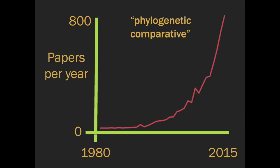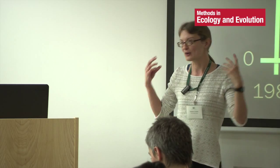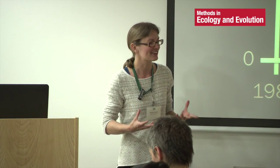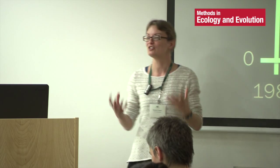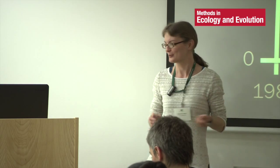This is some data I took from Google Scholar last week. You can see from 1980 up to 2015, this is the number of papers published each year which feature the term 'phylogenetic comparative.' This has increased a huge amount — we're up to nearly 800 papers a year using these methods. So they're incredibly popular, with loads of really exciting things that you can do with them. It's a really good time to be a comparative biologist.